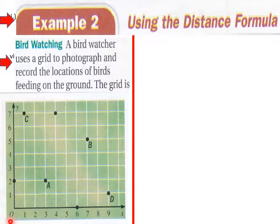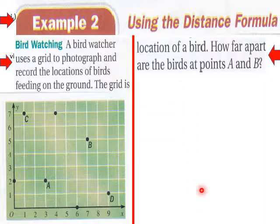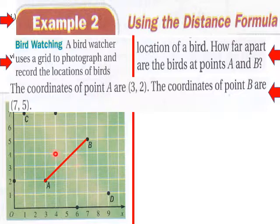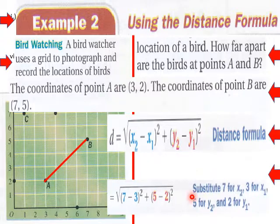Example 2, using the distance formula. A bird watcher uses a grid to photograph and record locations of birds feeding on the ground. How far apart are birds A and B? We want to know how far apart these two birds are. The coordinates are 3 comma 2 and 7 comma 5. We can plug that into our distance formula.